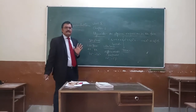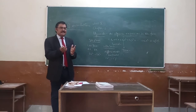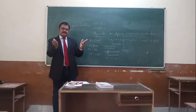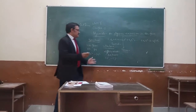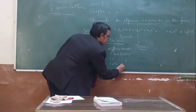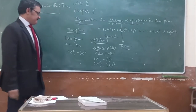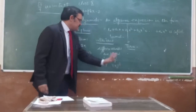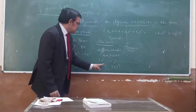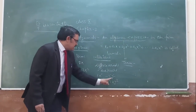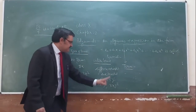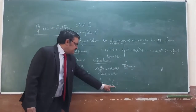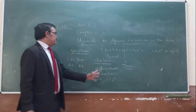Powers are same here, but variables are different. If variables are different, then it counts as unlike terms. Another example: 5x²y and 3xy². Variables are the same — x and y — but powers are different: power of y is 2 in one and 1 in the other; power of x is 2 in one and 1 in the other. So these are unlike terms. If variables are different, powers can also be different.